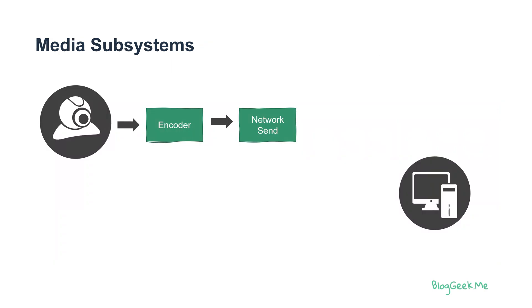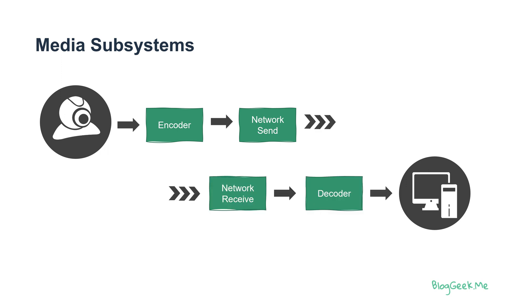In a media subsystem we're going to have the camera or the microphone. The data from there in raw format is going to go into the encoder. The encoder is going to compress that data, then we're going to send it over the network. On the other side we're going to receive that data, decode it, and play it back.